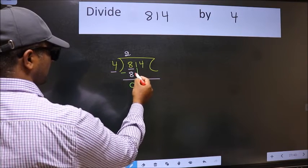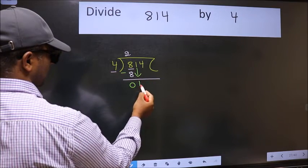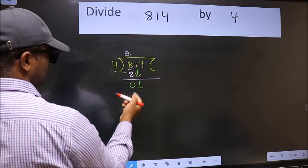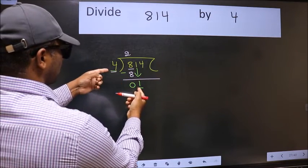After this, bring down the beside number, so 1 down. Now here we have 1 and here 4. 1 is smaller than 4.